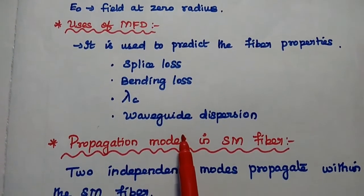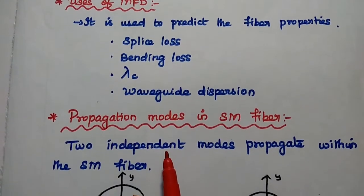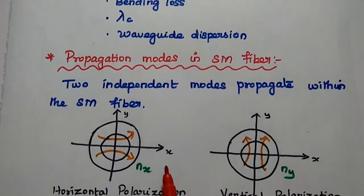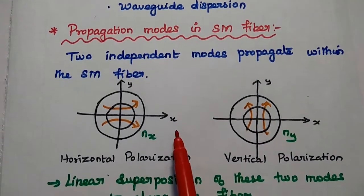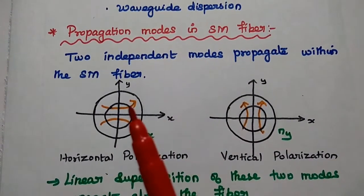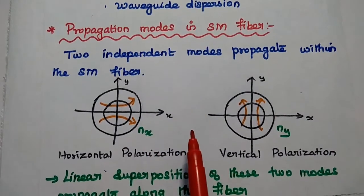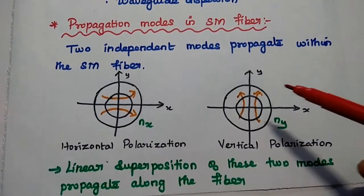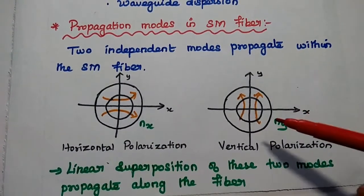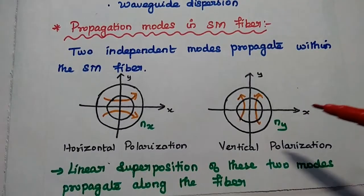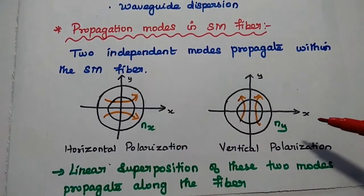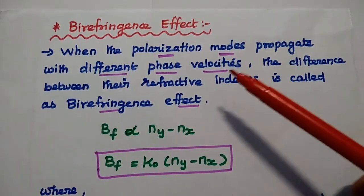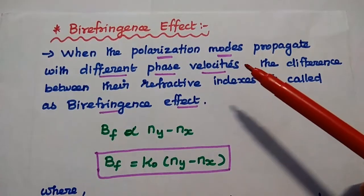MFD is an important parameter in fiber characteristics. Next, we discuss propagation modes in single mode fiber. Two independent modes propagate within the single mode fiber: one is horizontal propagation and the next one is vertical propagation. There is a linear superposition of these two modes in a single mode fiber, which propagate along the fiber core.